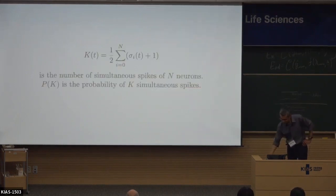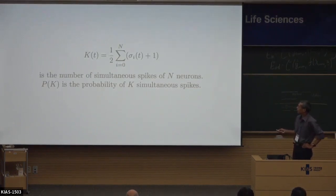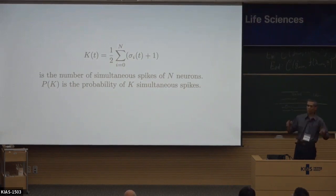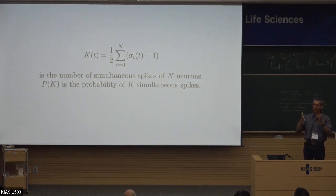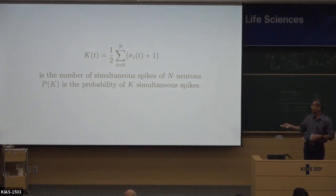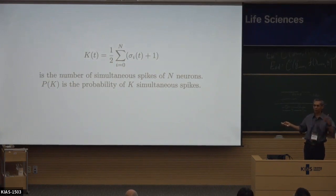Finally, for real neuronal spiking data: k(t) is the probability of k simultaneous spikes. With N neurons spiking, this collective statistic counts how many neurons spiked simultaneously at each time step.